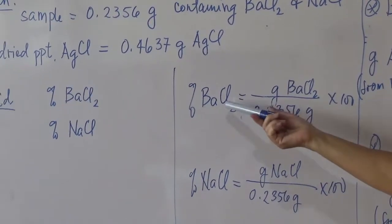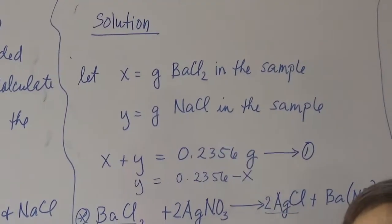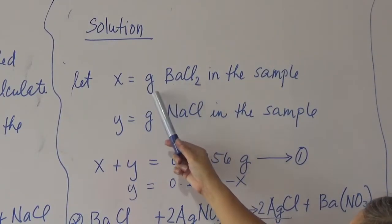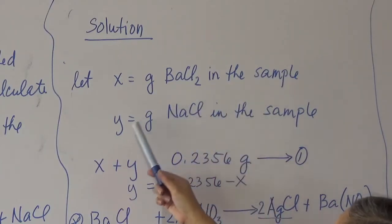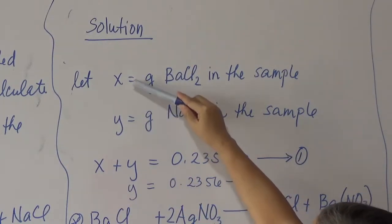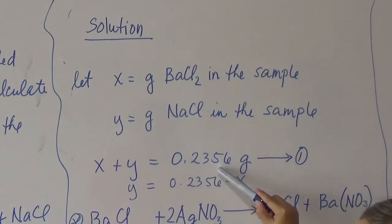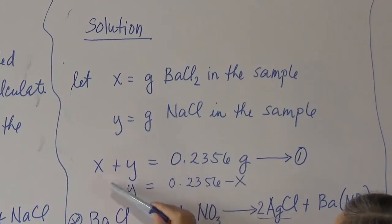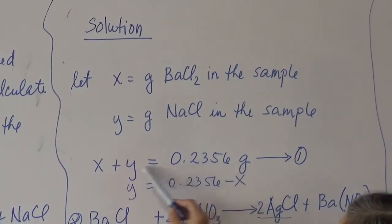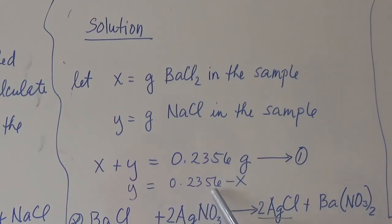Since we do not know the amount of barium chloride and sodium chloride in the sample, we are going to let x be the unknown. We will do algebra in this problem. Let x be the amount of barium chloride in grams in the sample, and let y be the amount of sodium chloride in the sample. Adding the two: x + y = 0.2356. Solving one unknown in terms of the other: y = 0.2356 − x.